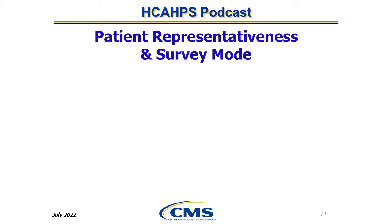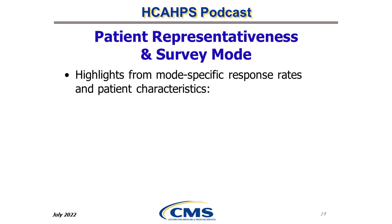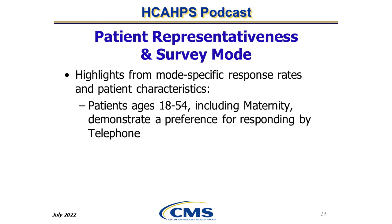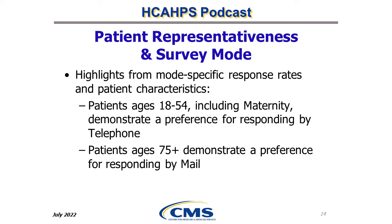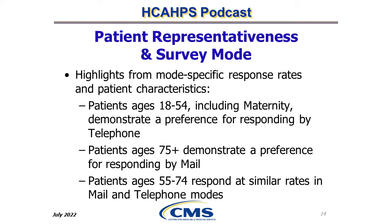Hospital distributions for patient characteristics can be used to learn about a given hospital's relative ranking among all hospitals. Those calculations can be utilized by hospitals and survey vendors to choose a survey mode that will maximize response rates. Patients in the 18–54 age range, including maternity patients, demonstrate a preference for responding by phone. Patients 75 and older demonstrate a preference for responding by mail, while patients in the 55–74 age range respond at similar rates by mail and telephone.